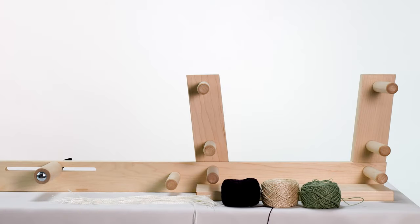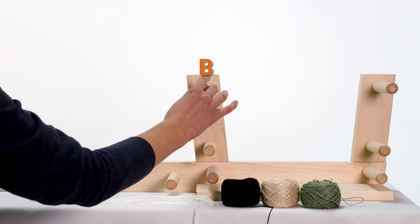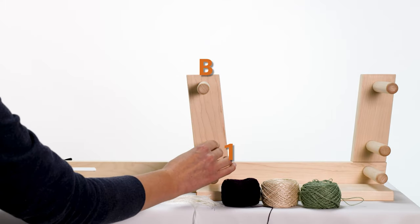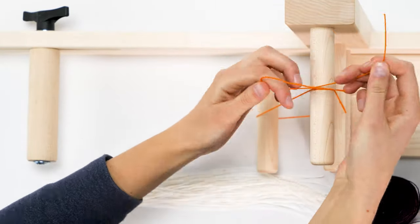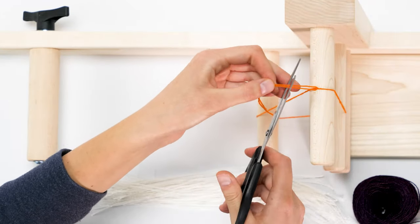To make a string heddle, take the yarn and wrap it around pegs B, 1, and 5. Tie with a square knot and cut the ends to about half an inch. You can repeat this process for as many heddles as you need.